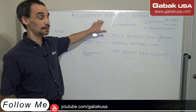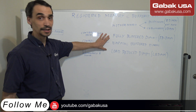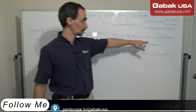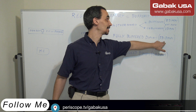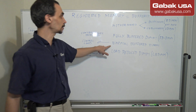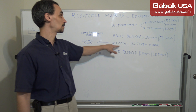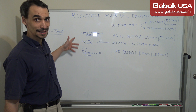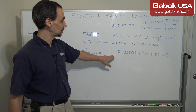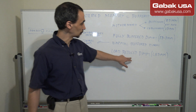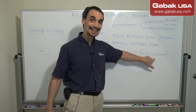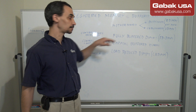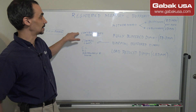When you buy registered memory you're going to have three options. The main option is Fully Buffered DIMM, also called FB-DIMM. The second is the normal buffered DIMM. The third is Load Reduced DIMM, or LRDIMM.